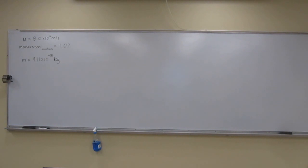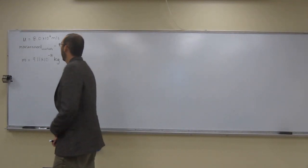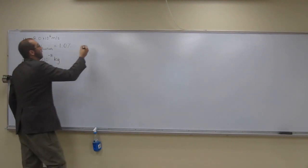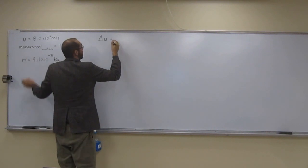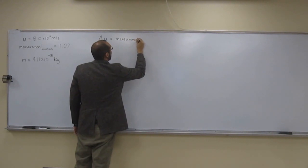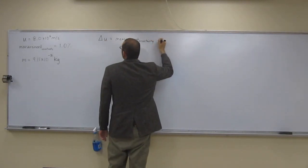And then the mass of an electron is 9.11 times 10 to the negative 31 kilograms. So the first thing you're going to want to do is calculate the uncertainty in the electron's speed. It gives you these two numbers here, and from that you need to figure out what delta U is. We're going to say delta U is going to be this measurement uncertainty times U.